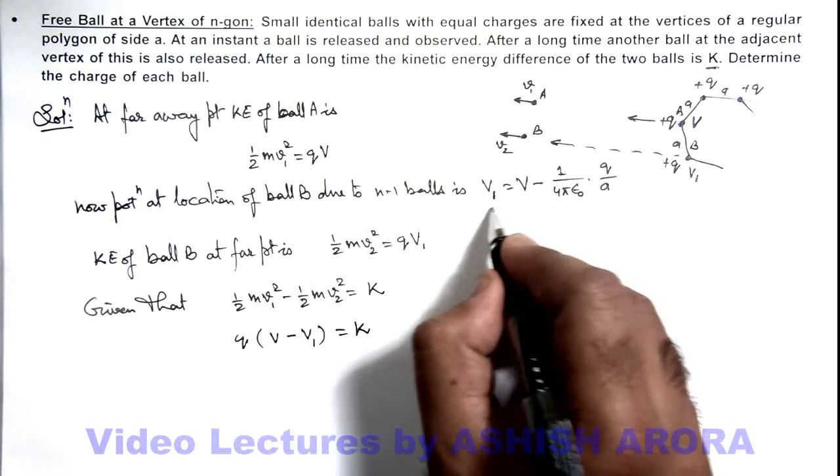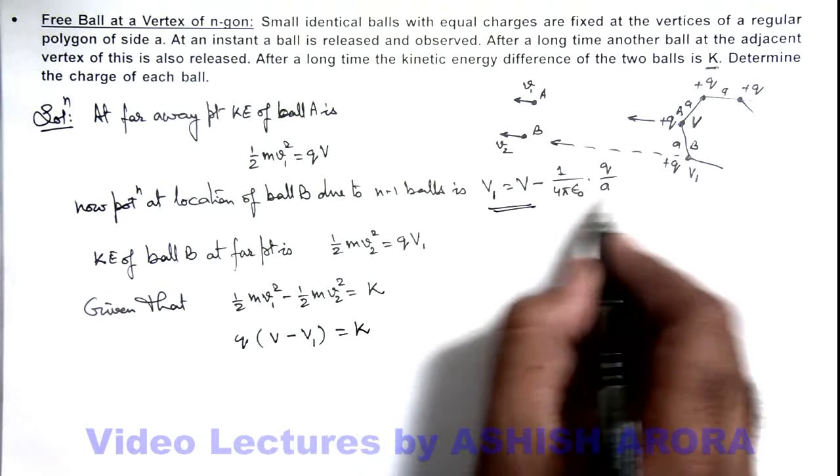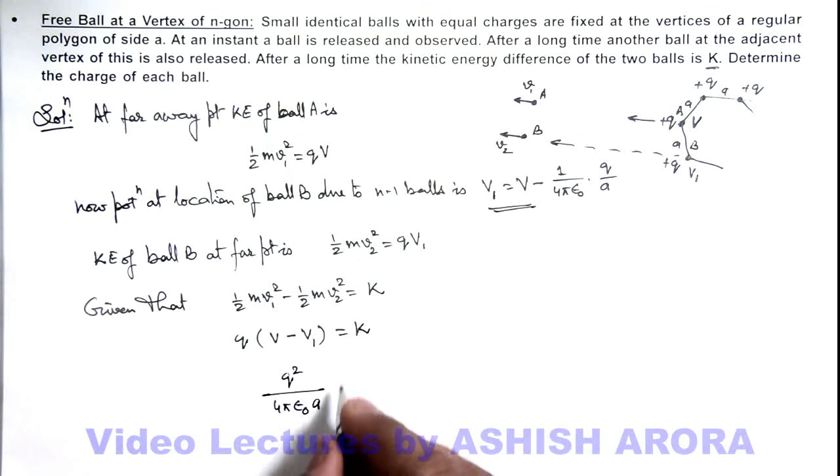And the value of v - v₁ I can calculate from here which is q/(4πε₀a). So this will give me q²/(4πε₀a) is equal to the total kinetic energy K.